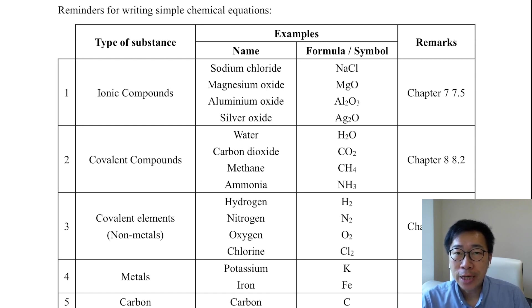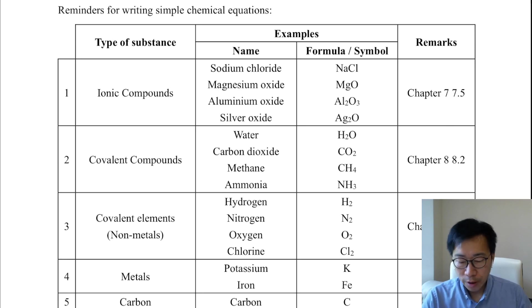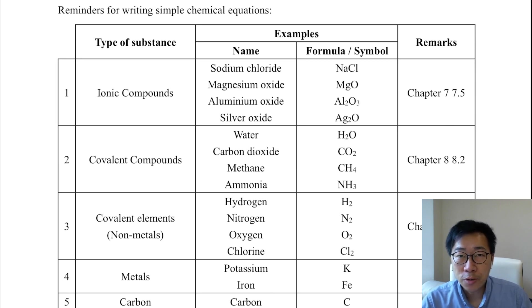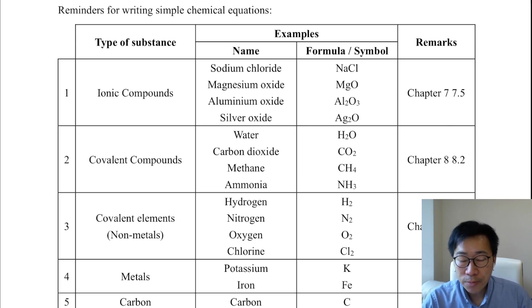If you are a beginner at writing chemical equations, you need to take note of the following. First of all, the substances involved in a chemical equation — you should classify them into the following types.